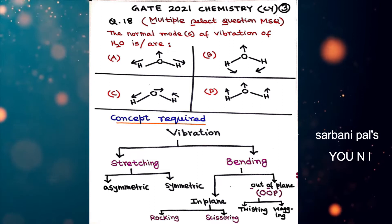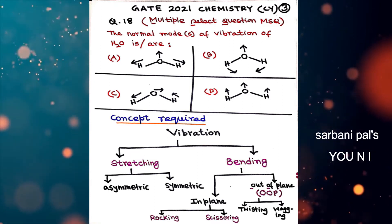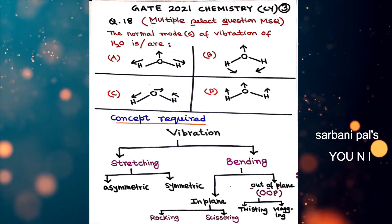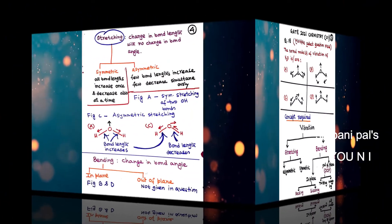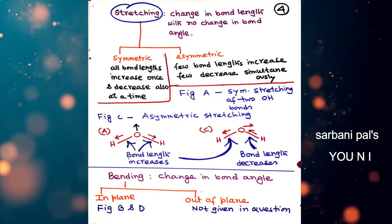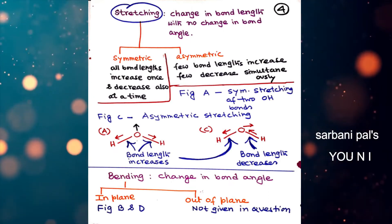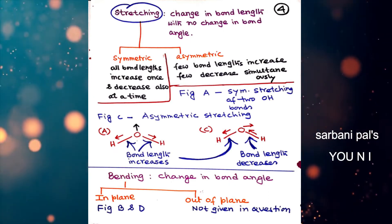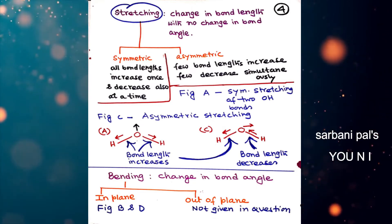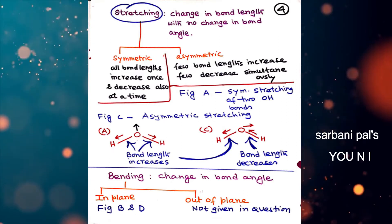In-plane bending is divided into two categories: rocking and scissoring. Out-of-plane bending is also divided into two: twisting and wagging. Now considering the four figures A, B, C, and D: figure A represents the symmetrical stretching of water, figure C represents the anti-symmetric (asymmetric) stretching of water, and figures B and D are related to bending, not stretching.